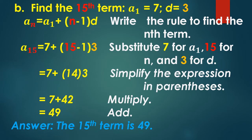Next, substitute 7 for A sub 1, 15 for n, and 3 for d, the common difference. So it becomes: A sub 15 is equal to 7 plus open parenthesis 15 minus 1 close parenthesis times 3. Simplify the expression in parenthesis: 15 minus 1 equals 14, then times 3. So it becomes 7 plus 14 times 3. Multiply: 14 times 3 is equal to 42. So it becomes 7 plus 42. Add 7 plus 42, it becomes 49. So, the 15th term is 49.